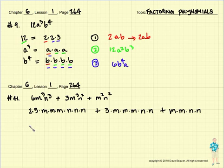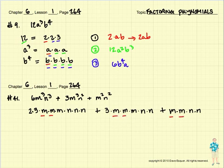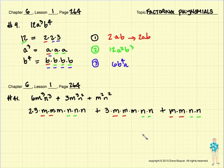Let's stare at this for just a second and see what we have in common all the way across. In each of the three terms, we have to have the same things appear. We have m's in each term — another set of m's, another set of m's. How many n's can we take out? There's a set of n's in each term. We can't take out the 2 or the 3 because nothing appears in this third term way over here.